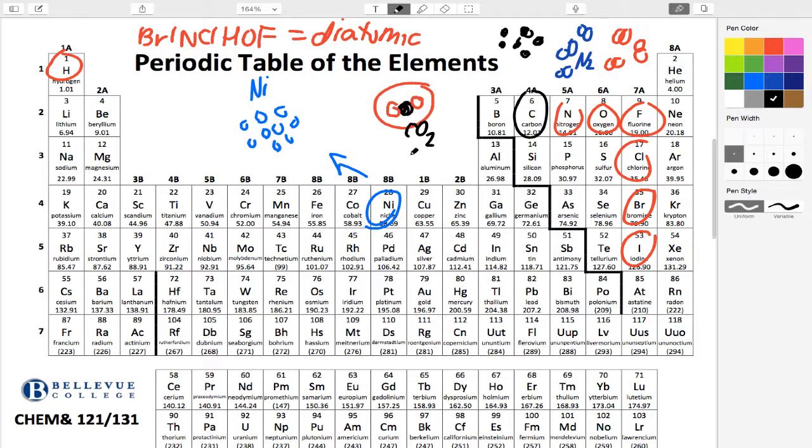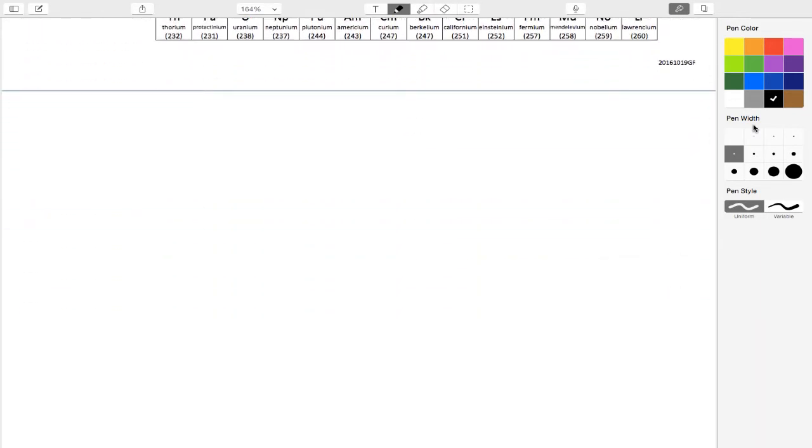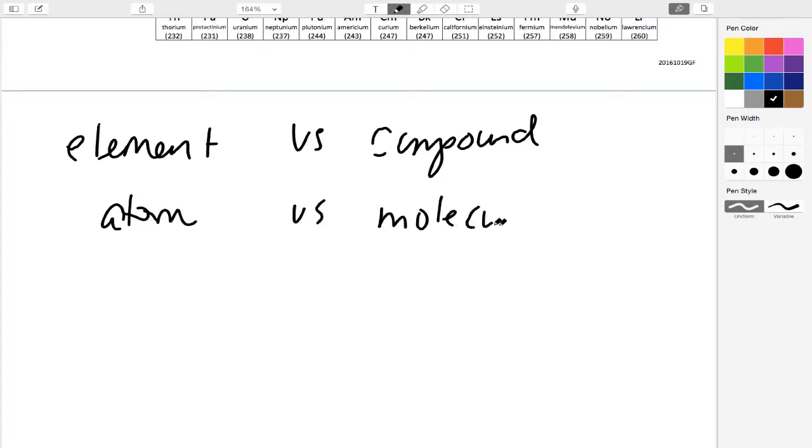So it's good to review those terms. I'll write them down right here. So you have element versus compound, and where a compound is more than one element, you also have an atom versus a molecule, where a molecule is more than one atom grouped together.